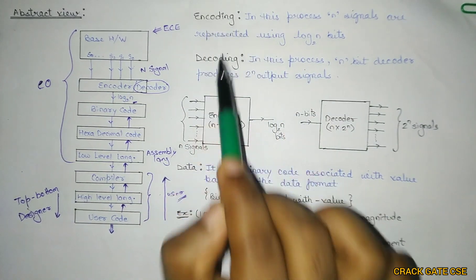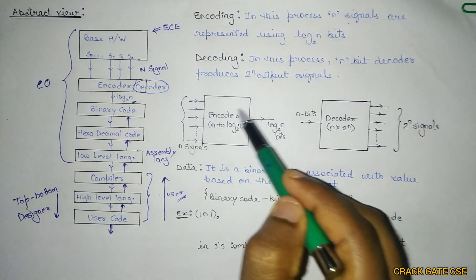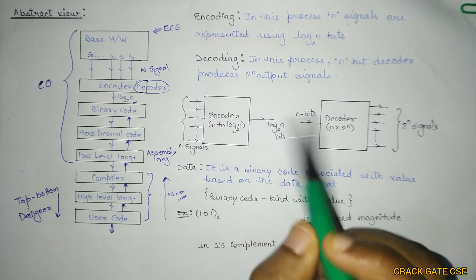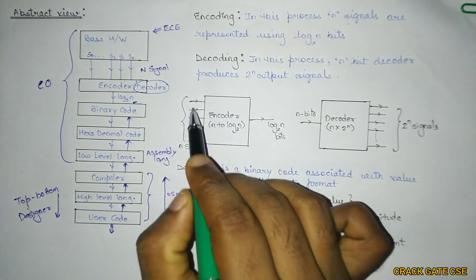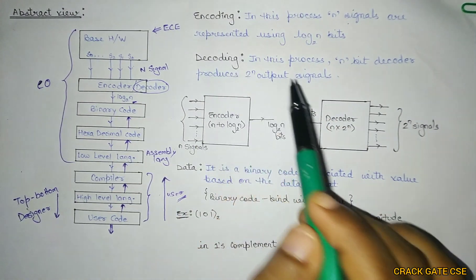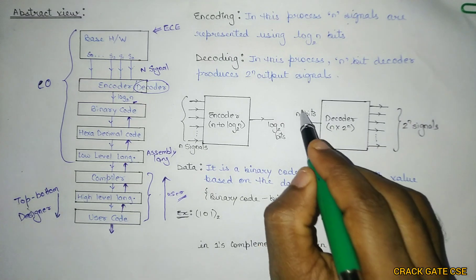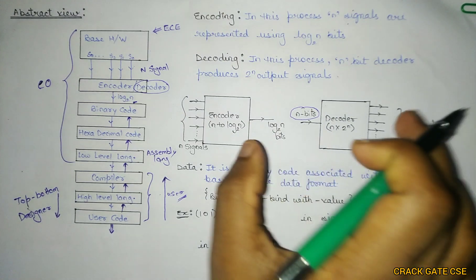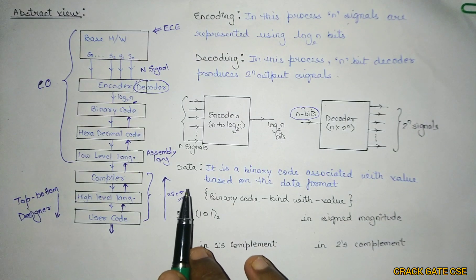Now let's understand encoding and decoding. In encoding, n signals are represented using log₂(n) bits. The encoder takes n signals as input and converts them into log₂(n) bits, minimizing space. The decoder is the opposite: given n bits as input, it produces 2ⁿ output signals. So the encoder and decoder work vice versa.